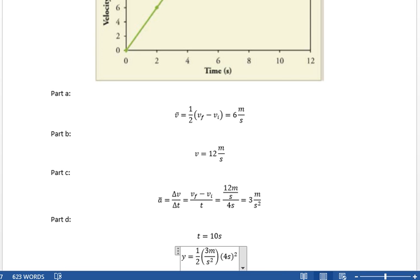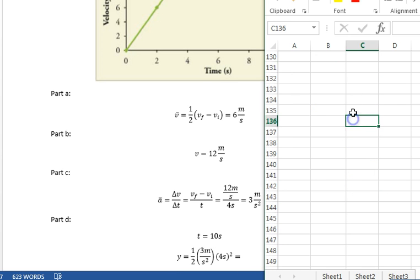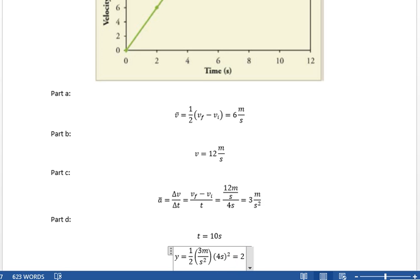That's the first part of the race. How far does he go during that first little bit of race? So, 1 half times 3 times 4 squared is 24 meters. 24 meters.